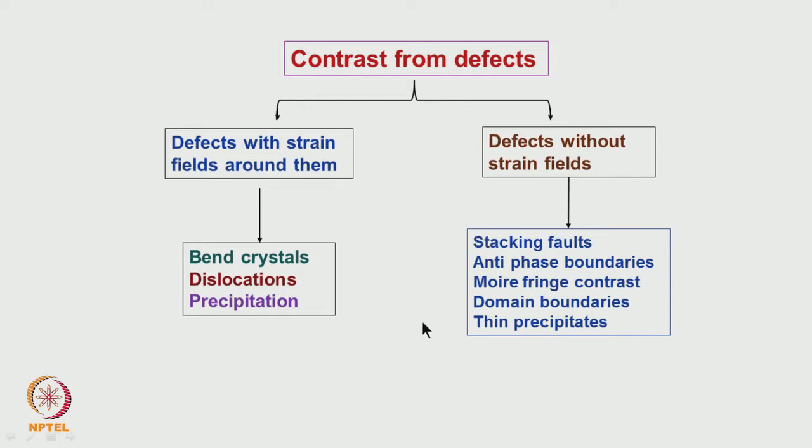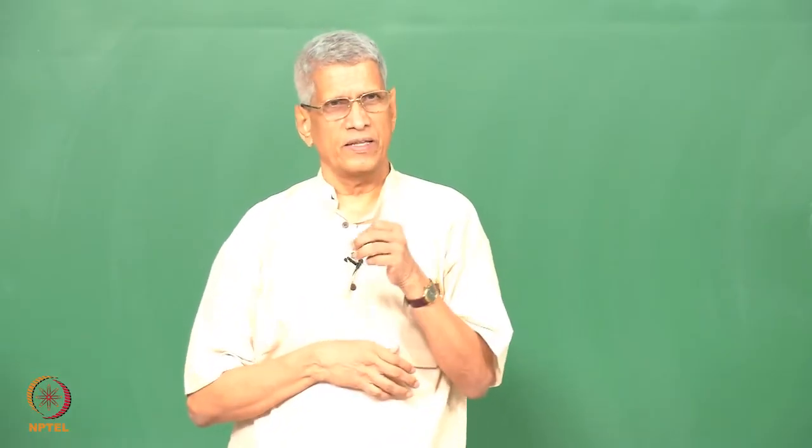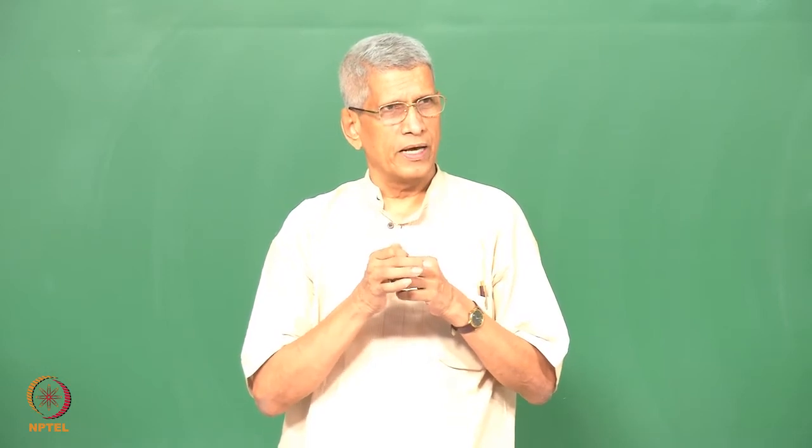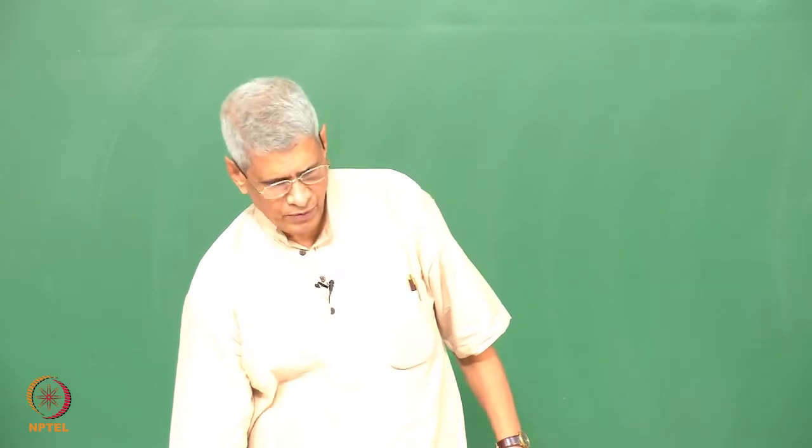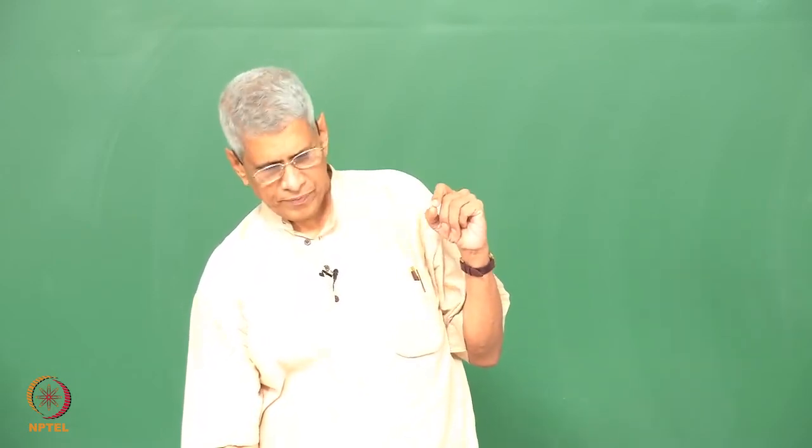The types of defects we will consider are: a bent crystal itself; defects that cause bending or shearing of planes, which we call dislocations; and coherent precipitates present in many materials. When coherent precipitates are there, to maintain coherency between the matrix and the precipitate, some bending of planes takes place close to the interface, giving rise to strain in the lattice. Dislocations are also imaged using a technique called the weak beam technique, which I will also mention.